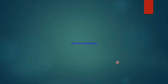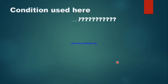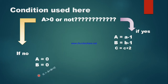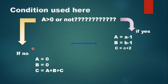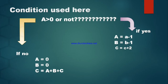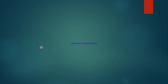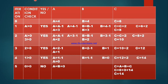If we check the condition a greater than 0 and the condition is true, then we execute: a = a minus 1, b = b minus 1, c = c plus 2. If the condition is false, meaning a equals 0, then we do: a equal to 0, b equal to 0, c equal to a plus b plus c. We will calculate these two sets of formulas. If condition is true, the yes part runs; if condition is false, the no part runs.